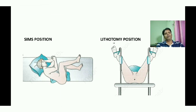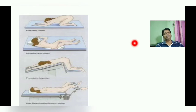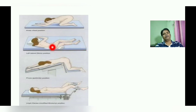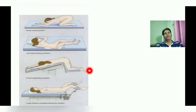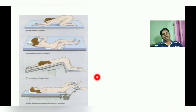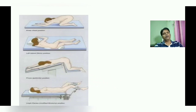Next, we will discuss the same positions using another picture. You can see the knee chest position or knee elbow position here, and this is the Sims position or left lateral decubitus position, where the left lower limb is extended completely and the right lower limb is flexed. The third one shown is called the jackknife position, ideally useful for pilonidal sinus in the sacral region. The lithotomy position shows the thigh in external rotation, abduction, and flexion, with the knee also flexed.